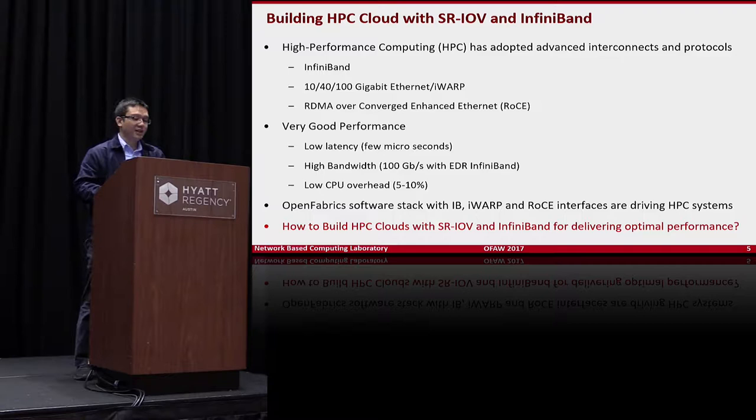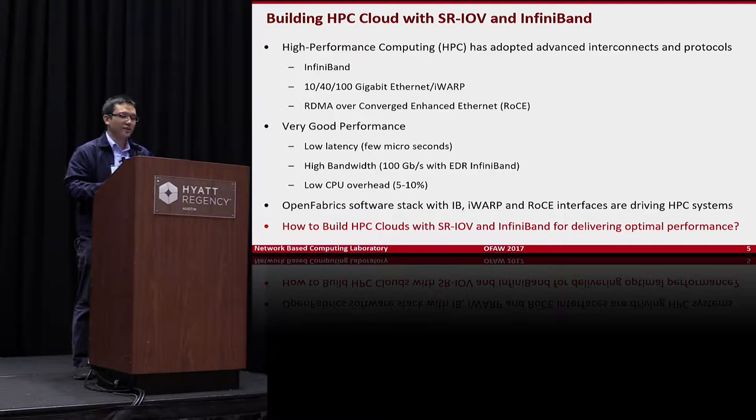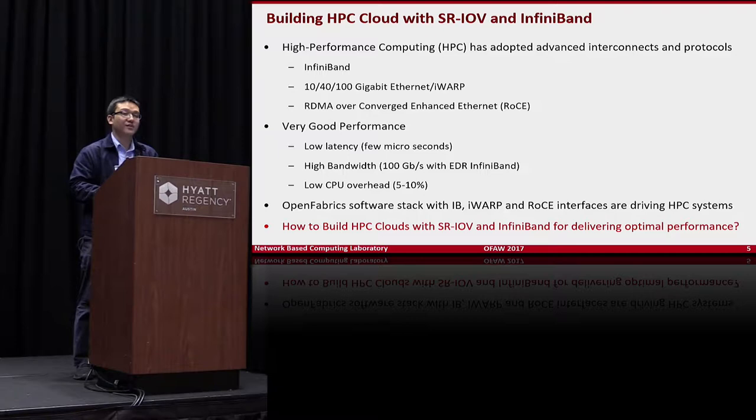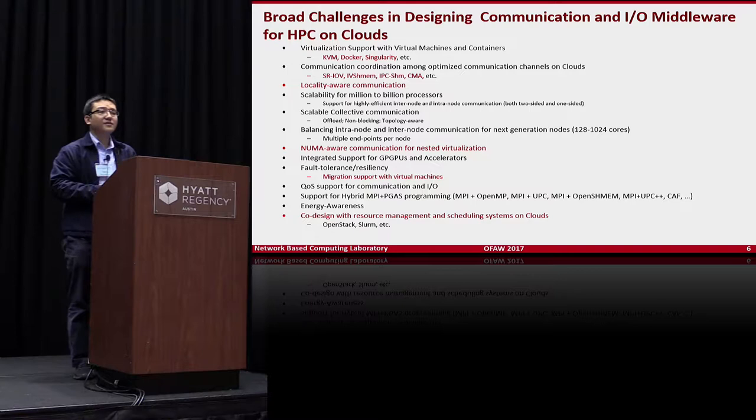InfiniBand and other high-performance interconnects — such as 10 GbE, 40 GbE, 100 GbE, or RoCE — have been widely used in HPC clusters. With SR-IOV, the question becomes: how do we build efficient HPC clouds with SR-IOV and InfiniBand to deliver near-native performance even under a virtualization environment?